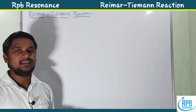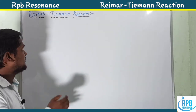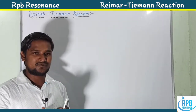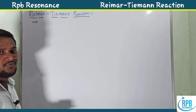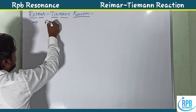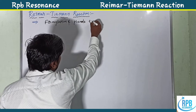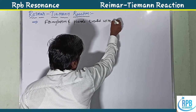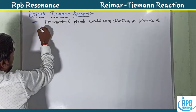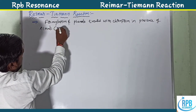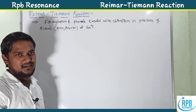Welcome to RP Beta Resonance Chemistry. Today we continue our lectures on named reactions, specifically the Reimer-Tiemann reaction. The Reimer-Tiemann reaction is simply the formulation of phenols — when a phenol is treated with chloroform in the presence of alkali (KOH or NaOH) at 60 degrees centigrade, it is known as the Reimer-Tiemann reaction.